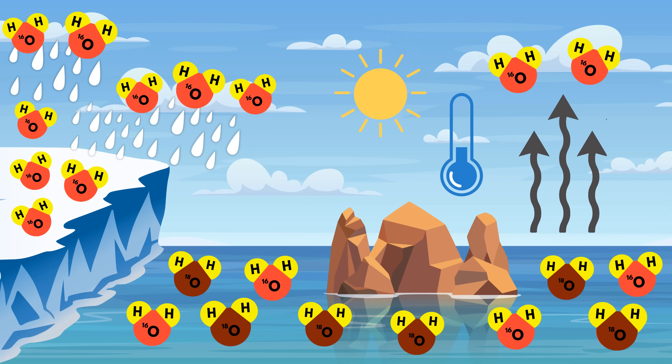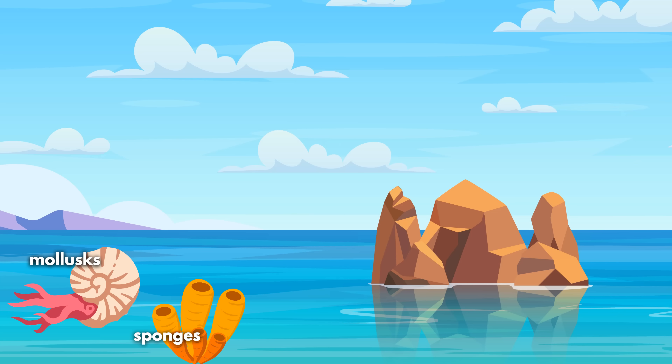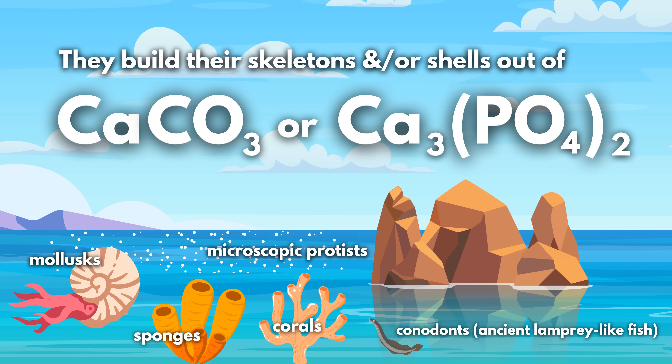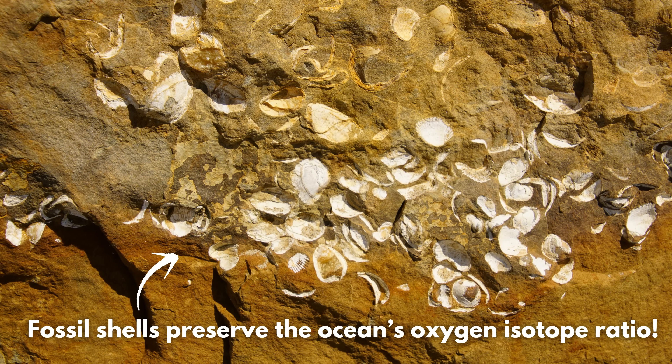Ice traps a lot of the light oxygen-16 at the poles during cool periods, causing the global ocean oxygen isotope ratio to change due to global temperature changes. So this explains how oxygen isotope ratios in the ocean change with temperature — but how do we measure that? Ancient ocean water isn't preserved. Well, when organisms like molluscs, sponges, corals, foraminifera, and conodonts build their calcium carbonate and/or calcium phosphate shells and skeletons, they take oxygen from the ambient water to do so. And if they get fossilized, they preserve the ocean's oxygen-18 to 16 ratio from the time they were formed.